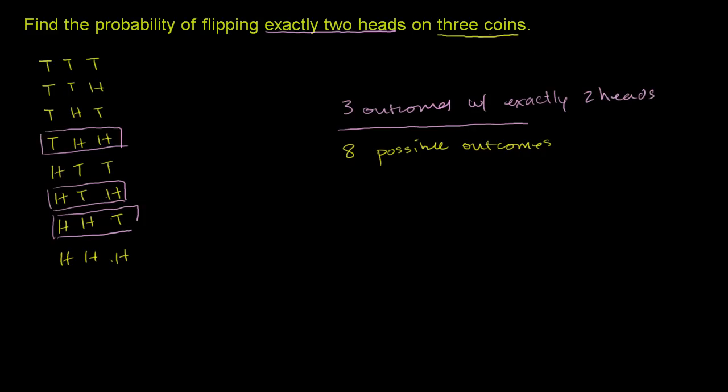So the probability of flipping exactly two heads - and the word exactly is important, because if you didn't say exactly, then maybe three heads, well you flipped two heads, so you have to say exactly two heads. So you don't include the situation where you get three heads.